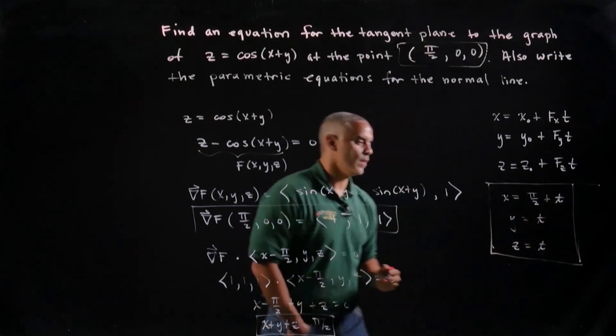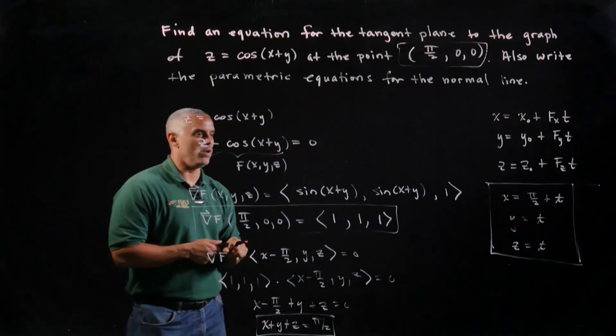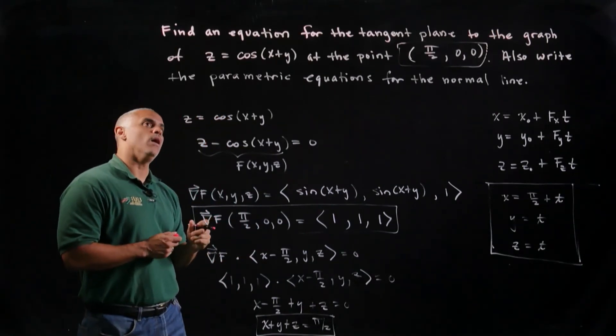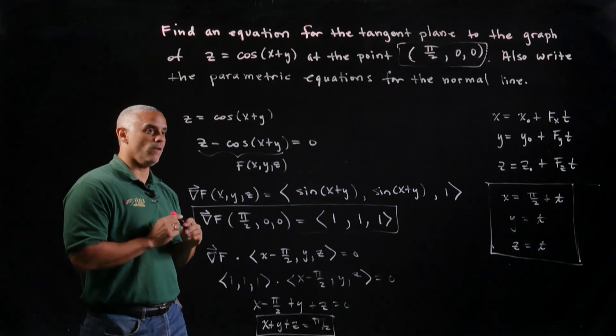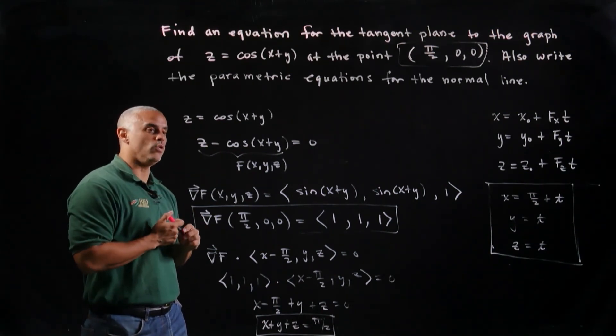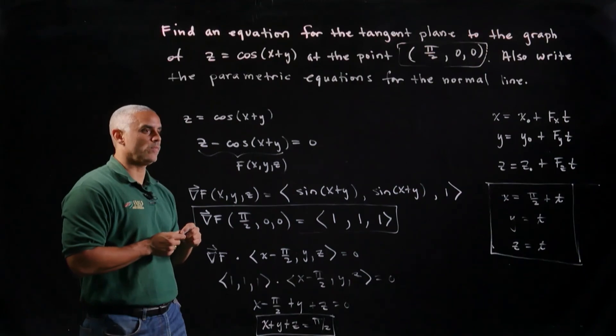And that's the parametric equations for the normal line of z equals the cosine of x plus y, while the level surface, z minus the cosine of x plus y. Thank you.